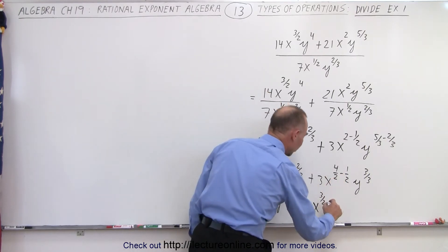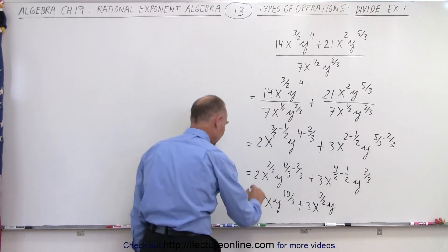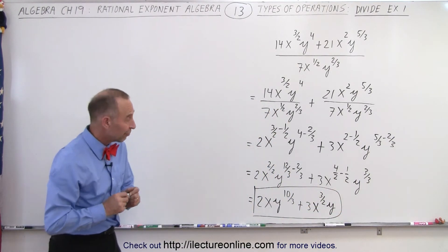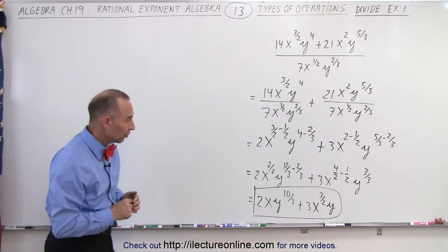And that would be y^1. We don't have to write to the 1st power. And that then becomes the final and simplified format of our original division.